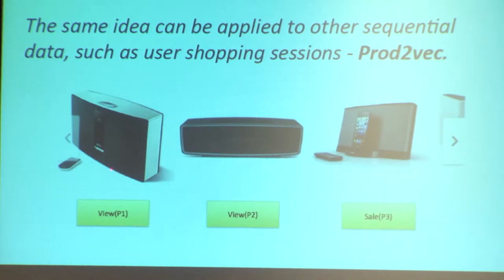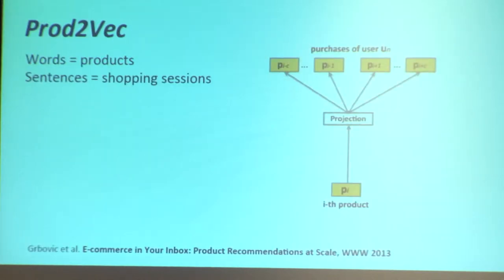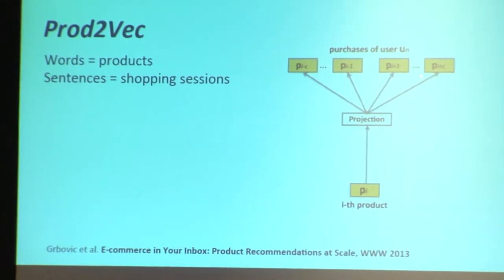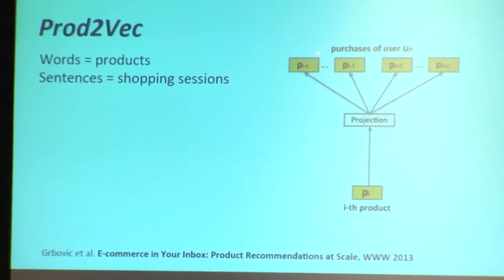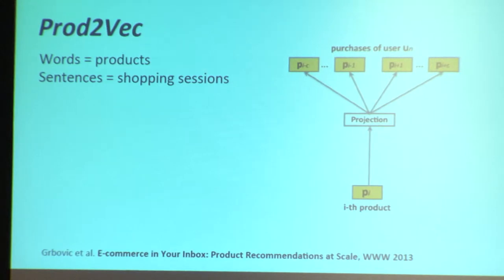You can do the same type of model where you have the center product trying to explain the context products. In the original paper by Gurbovich and others, they did this on email receipts — taking Yahoo mails that are receipts, sorting by timestamp, and creating product sequences. They call this Prod2Vec. This is the method we're trying to improve.